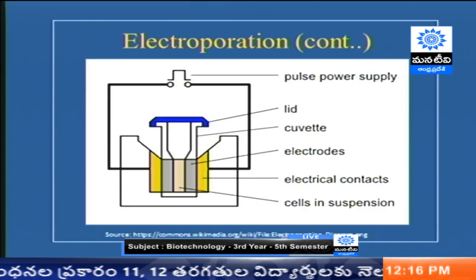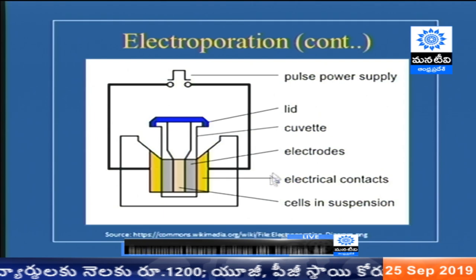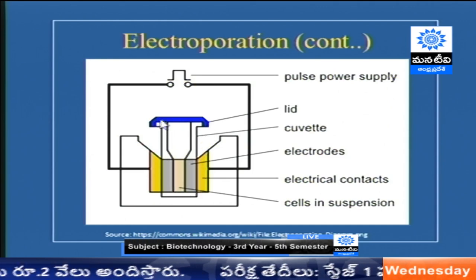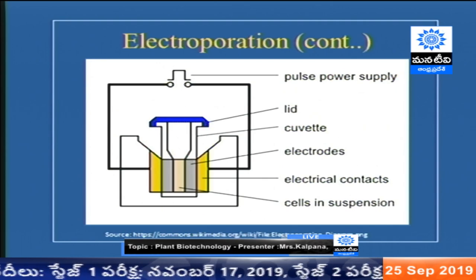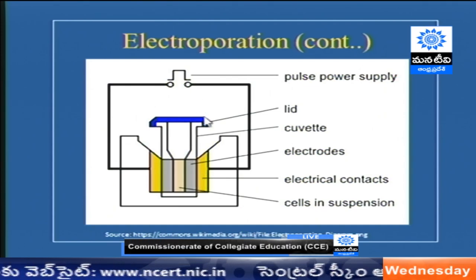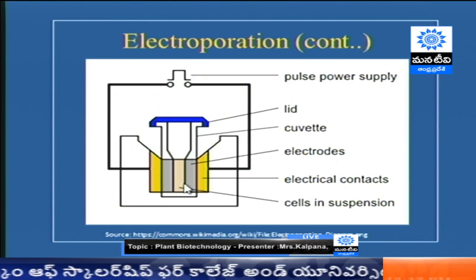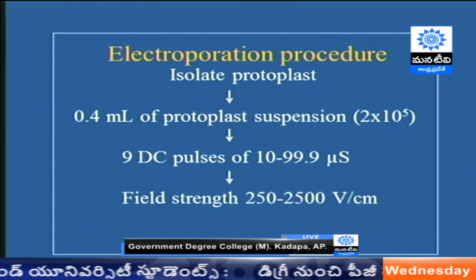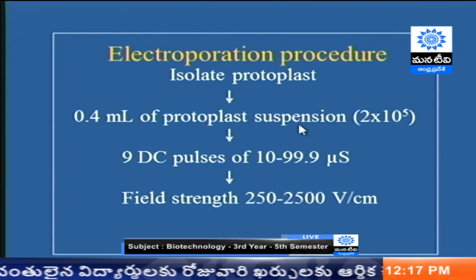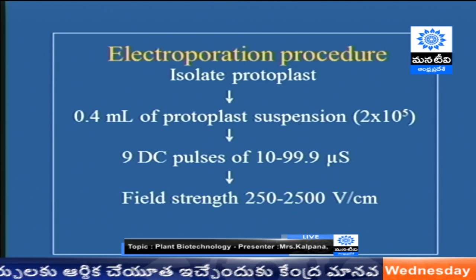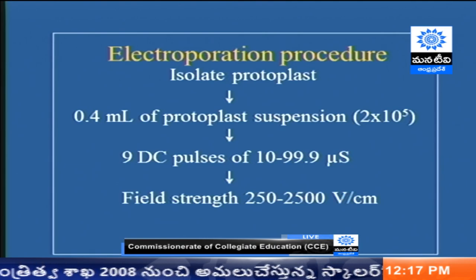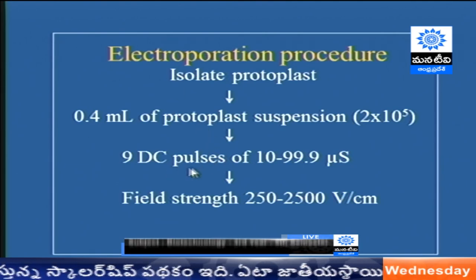This is the schematic diagram of the electroporation unit, where we can see the electric power supply. We supply DC current into a sterile cuvette — single-use cuvettes — with electric contacts. When we apply the electricity, through the buffer all the protoplasts receive the same electric pulse. Once the protoplasts are purified and isolated, we prepare the protoplast suspension at a particular cell density in a particular volume, then give direct current pulses.